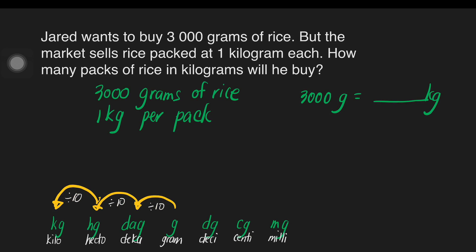In the previous video, as we move to the right, for each step, we multiply by 10. But this time, it is the opposite. As we move to the left, we divide for each step.